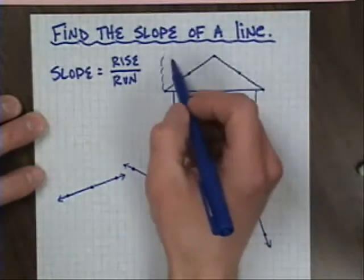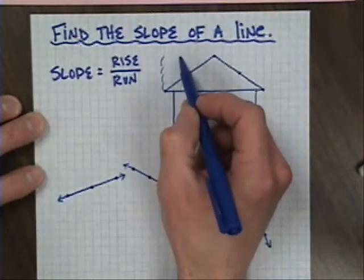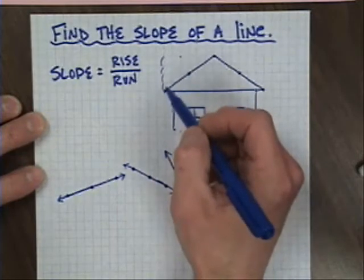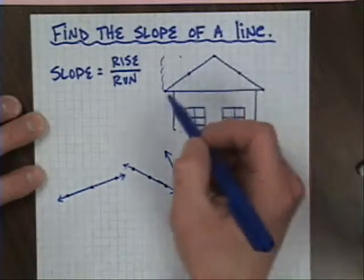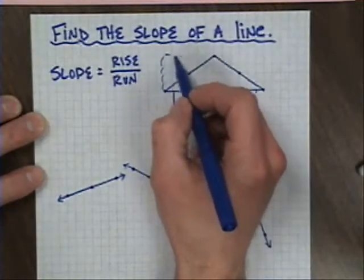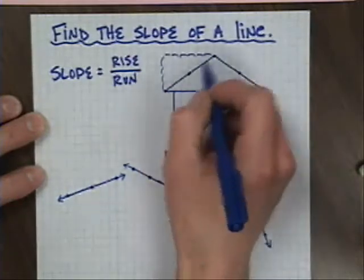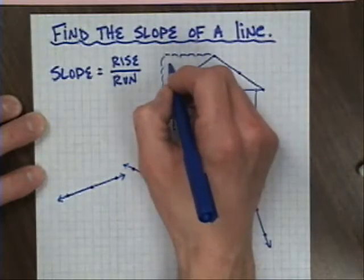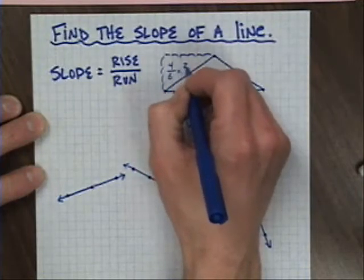We also have a run. That will dictate how steep it is. If I have a run of only about two, I'll have a very steep roof. If I had a run of maybe ten, I might have a very shallow roof. This particular drawing has a run of six. So this roof line right here has a slope of four over six, or two-thirds.